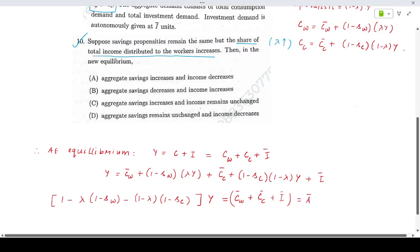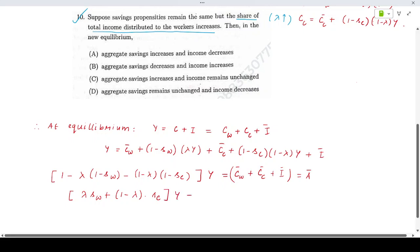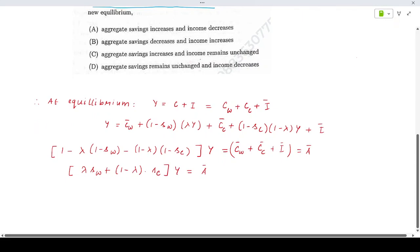In the exact same way, I am denoting it as A bar. The left-hand side will get simplified to lambda SW plus 1 minus lambda SC times Y equals A bar. So Y, or the optimal Y star, is A bar divided by lambda SW plus 1 minus lambda SC.